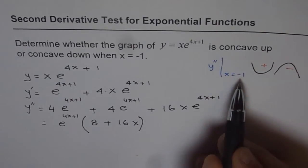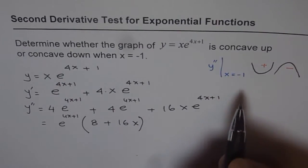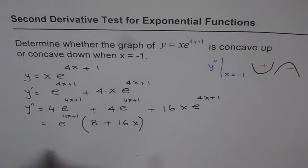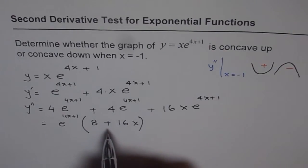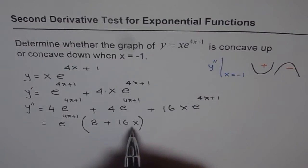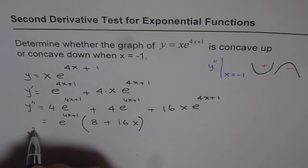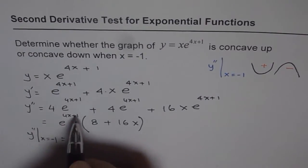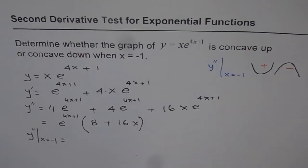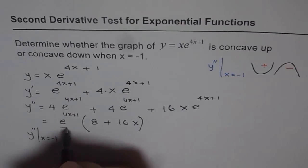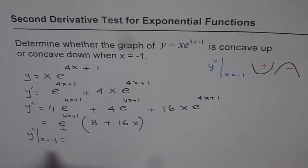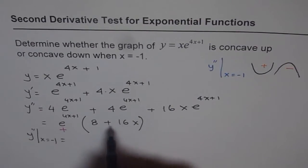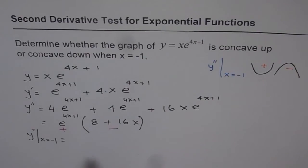Now we substitute x equals minus 1. The question is whether we get a positive or negative value. The exponential part e to the power of 4x plus 1 is always positive. For the bracket, with x equals minus 1 we get 8 plus 16 times minus 1, which is 8 minus 16, and since 16 is greater than 8, this part is negative. So the overall result is negative.